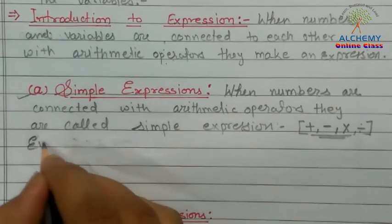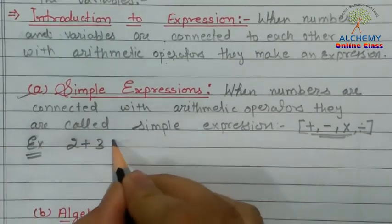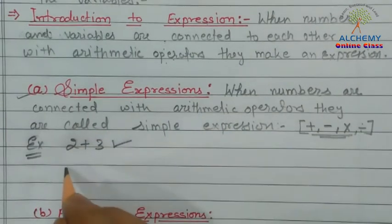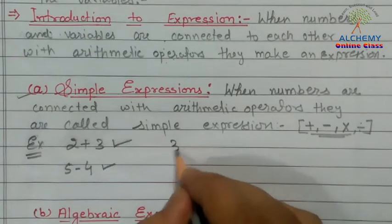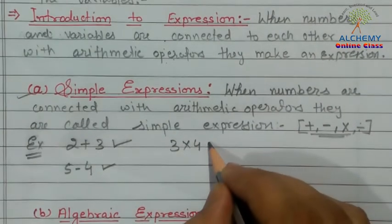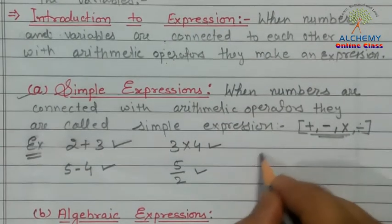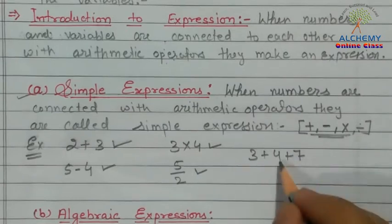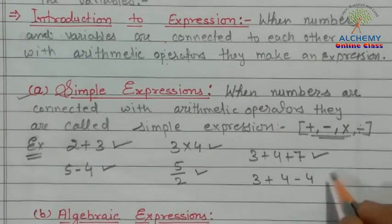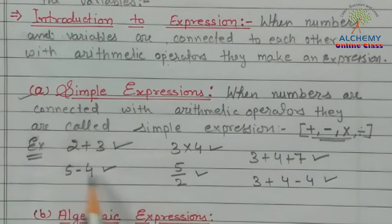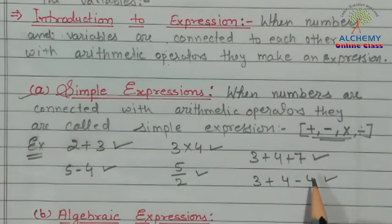For example, when we write 2 plus 3, that is a simple expression. When we write 5 minus 4, that is a simple expression. When we write 3 multiplied by 4, that is a simple expression. When we write 5 upon 2, that is a simple expression. When we write 3 plus 4 plus 7, or 3 plus 4 minus 4, those are also simple expressions. Where numbers are connected with arithmetic operators, they are called simple expressions.